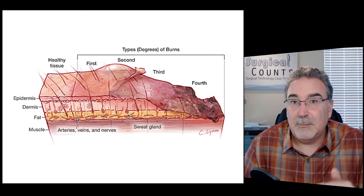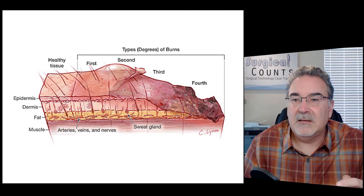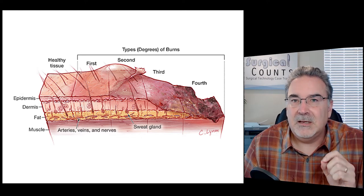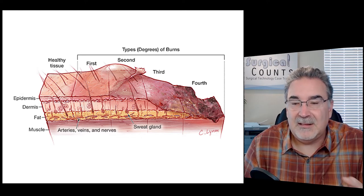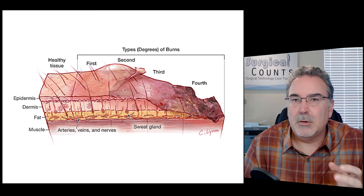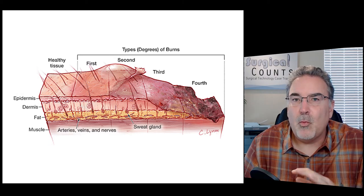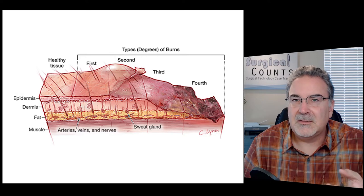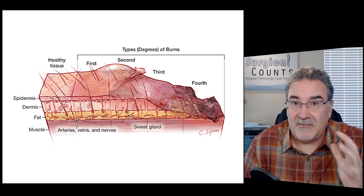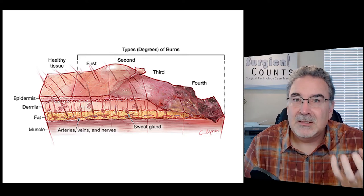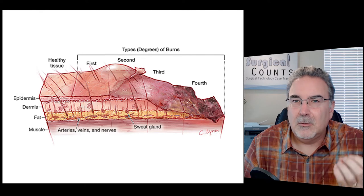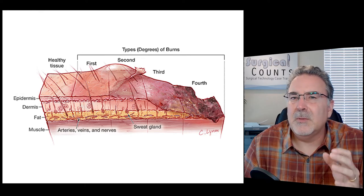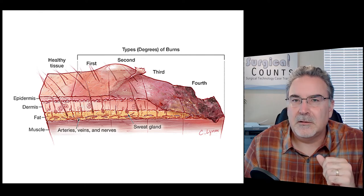Third-degree burns tend to get deeper still. In this case, we're going down through the dermis, possibly even into the subcutaneous fatty layer. Burns like these often have a pearly white color — similar to how when you cook a steak, that fatty layer stays a nice yellowish-white.